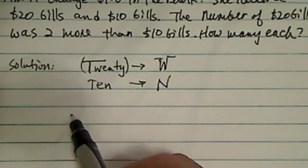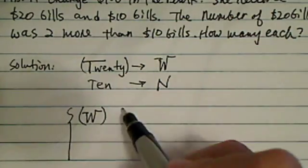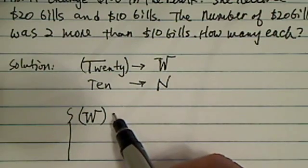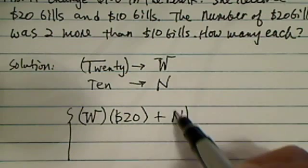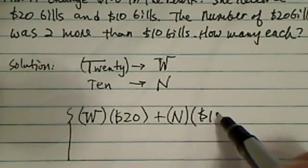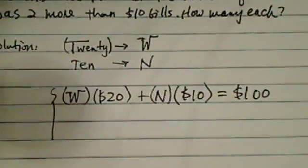So the first equation, you say there's W number of $20 bills, and since they're worth $20 each, and there's N number of $10 bills worth $10 each, altogether I have $100. So that's your first equation.